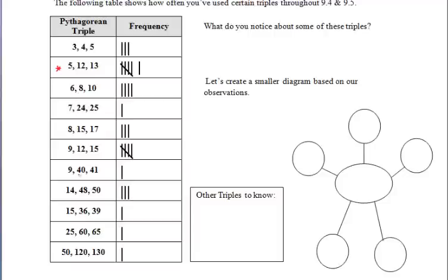Now let's look at 5, 12, 13. Working down the list, we have 15, 36, and 39, which means we took the 5, 12, 13 family and multiplied it by 3. And we have 25, 60, and 65, which means we multiplied it by 5. Then 50, 120, 130 — we multiplied that family by 10.